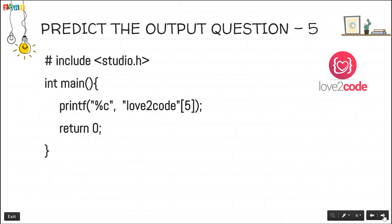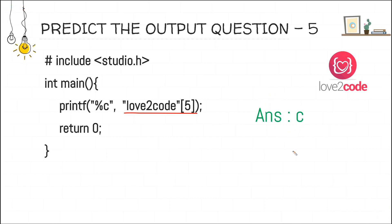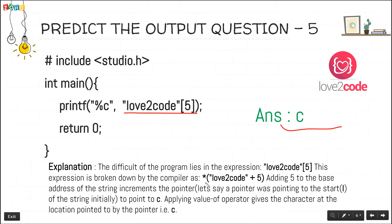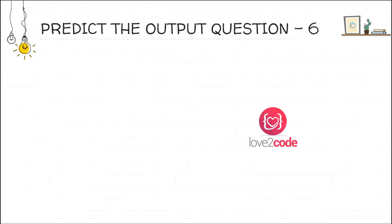The fifth question is similar to the previous one. We have to see how the compiler breaks the expression and returns the output. The expected output is the same, but the expression is in a different order — previously 5 was outside and the string was inside the bracket, now it is vice versa. The same explanation applies, so the output is still 'c'.